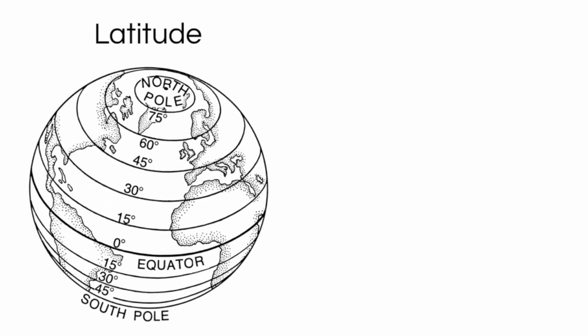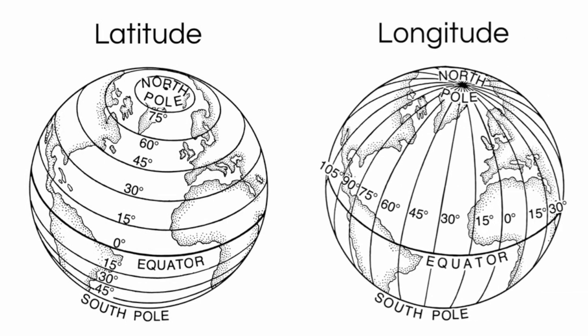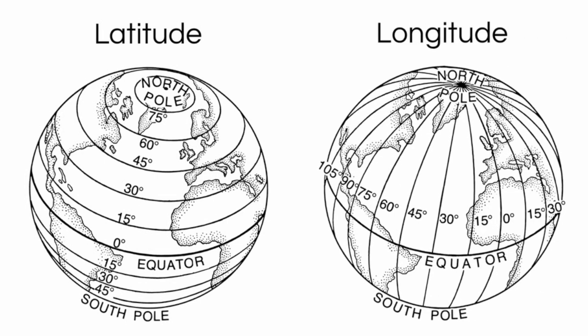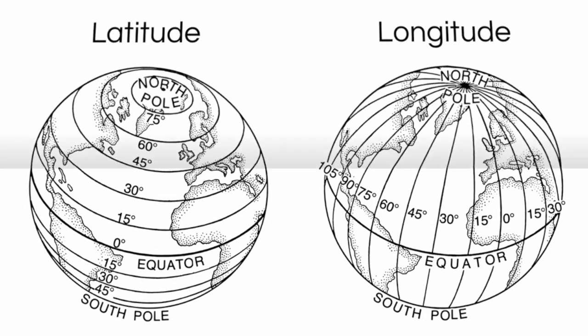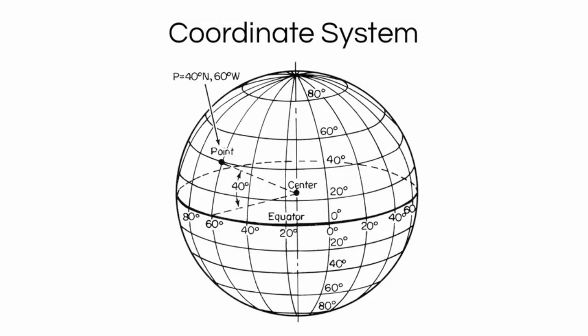These include latitude lines, seen here, showing your distance north or south of the equator, and longitude lines, seen here, showing your distance east or west of the prime meridian. If you put these two types of lines together, you end up with a coordinate system. A complete coordinate system allows you to pinpoint the exact location of any spot on the earth.